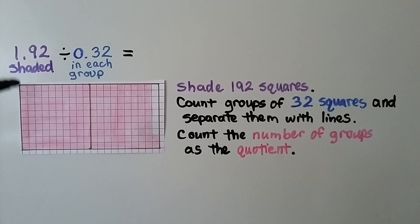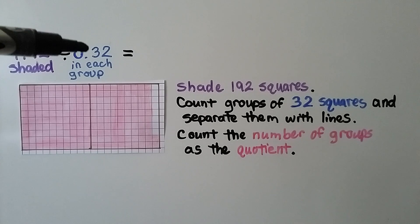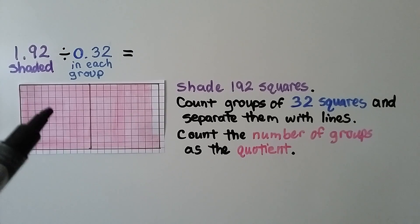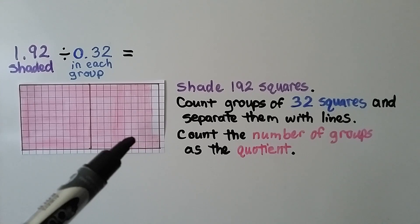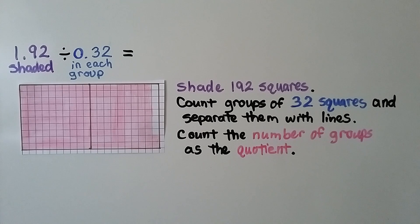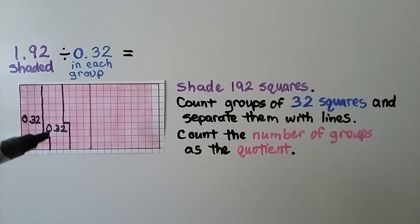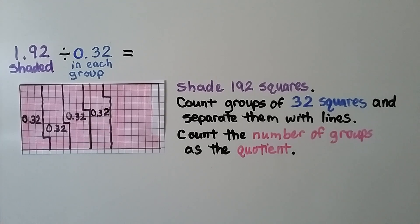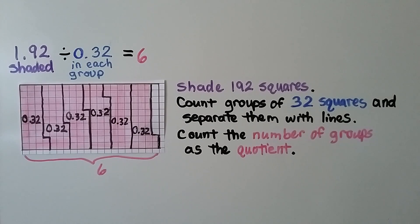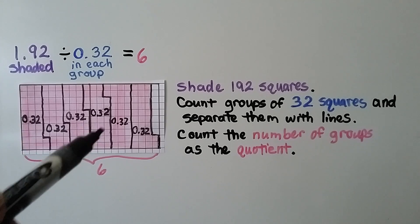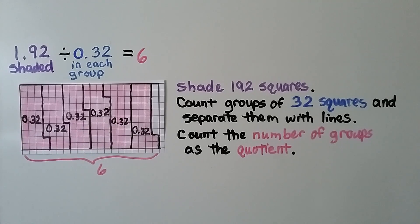Here we have 1 and 92 hundredths divided by 32 hundredths. We shade 192 squares for 192 hundredths and count groups of 32 squares, separating them with lines. We find 6 groups of 32 hundredths. It's equal to 6.